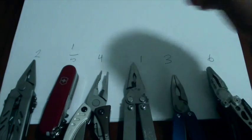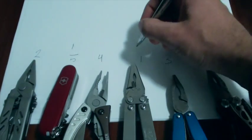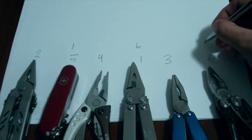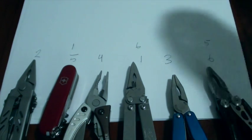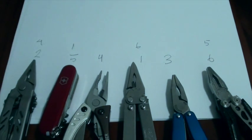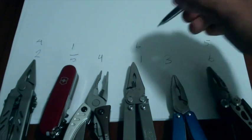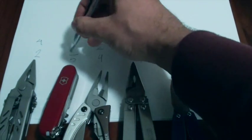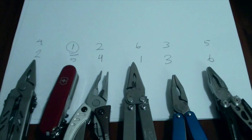Best pliers. 6 for the Sog. Great pliers there. 5 for the Skeletal. 4 for the MP400. 3 for the Juice. 2 for the Crucial and the 1 for the Explorer. Because there are no pliers. Not much you can do about that.